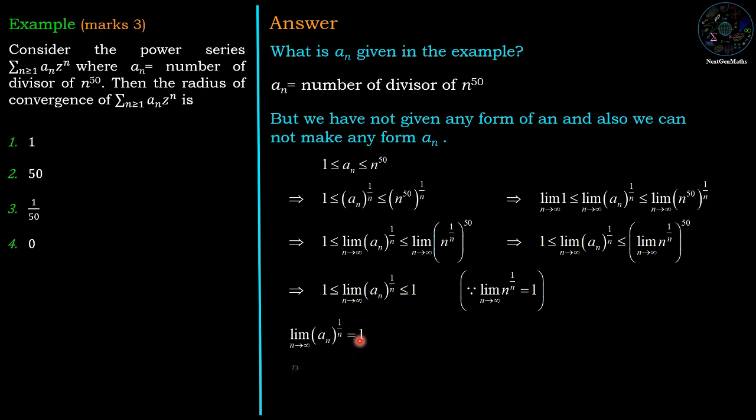And the radius of convergence is limit n tends to infinity 1 upon a_n^(1/n) then its value is 1/1 equal to 1. So radius of convergence has value 1, which is option number 1 and it is correct.